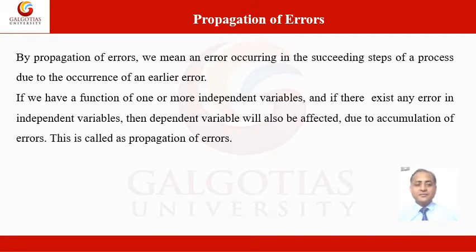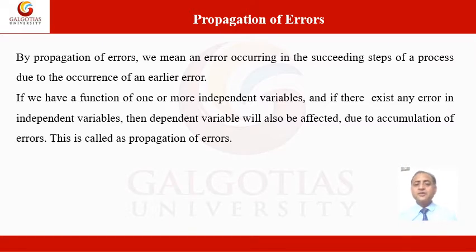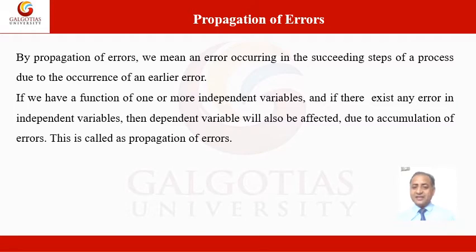Next is the propagation of errors. By propagation of errors, we mean an error occurring in succeeding steps of a process due to an earlier error. Suppose two numbers contain some errors; performing any mathematical operation on them means the result will also be erroneous. If there are errors in independent variables, the dependent variable will also be affected due to accumulation of errors. This process is called propagation of errors.